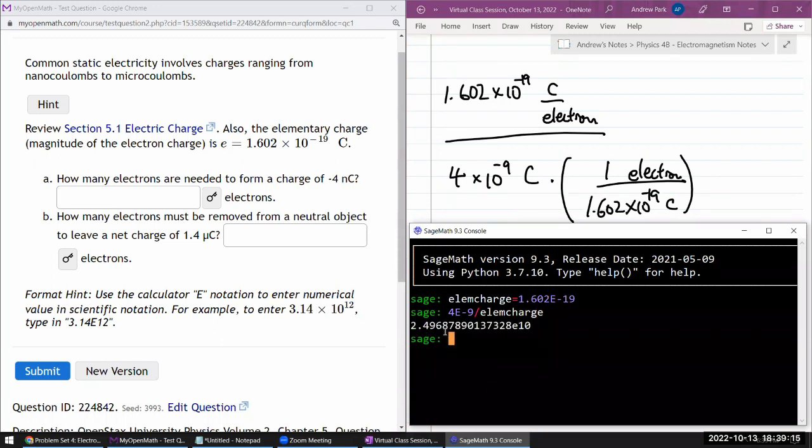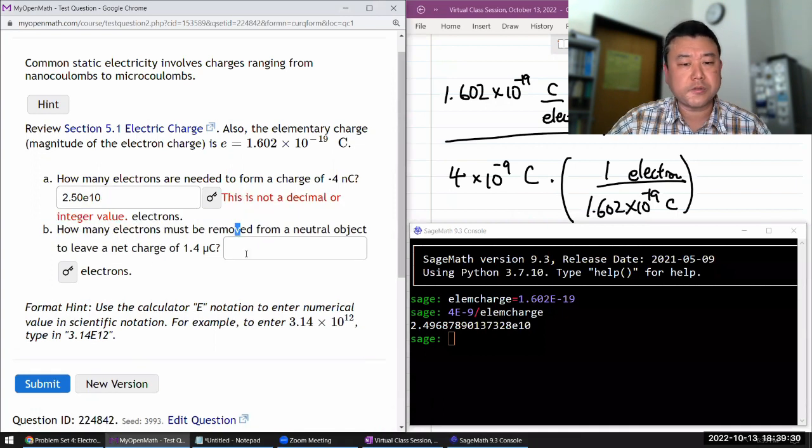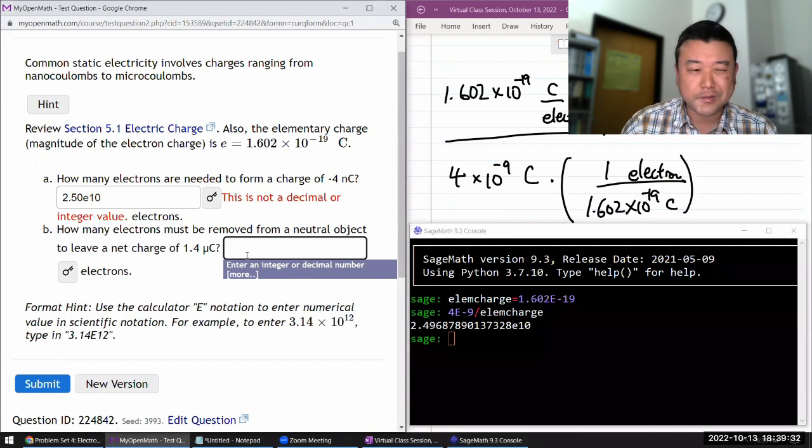So 2.5 times 10 to the power... that's the format hint. So 2.50e10. And by the way, you can also do lowercase. I think it will understand both. Let me give it a try. Capital is the correct one.